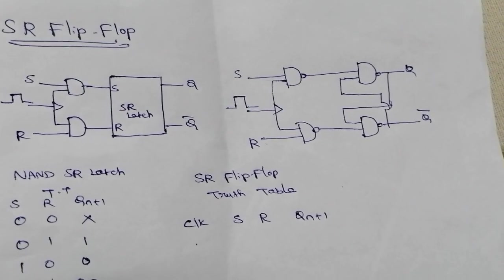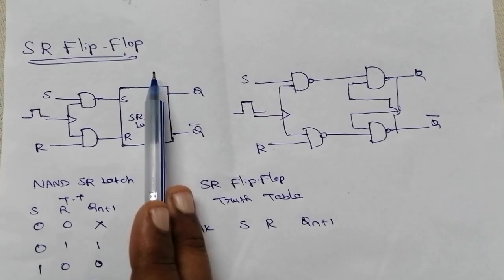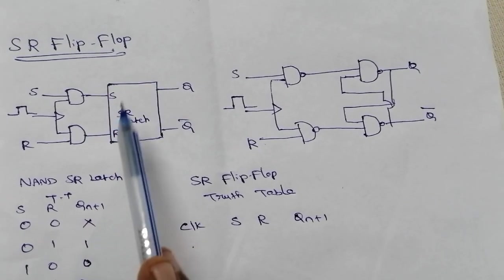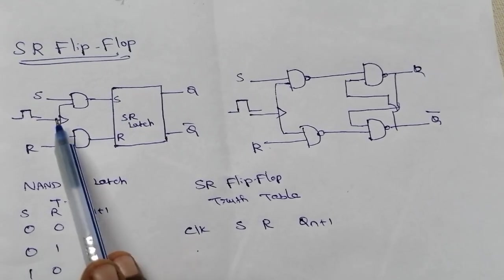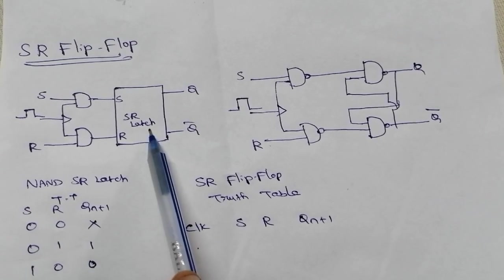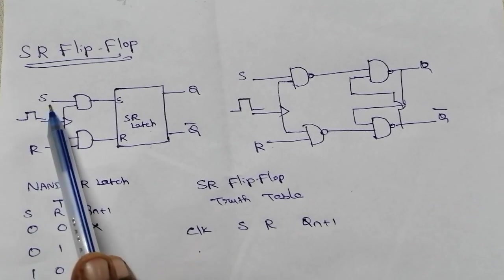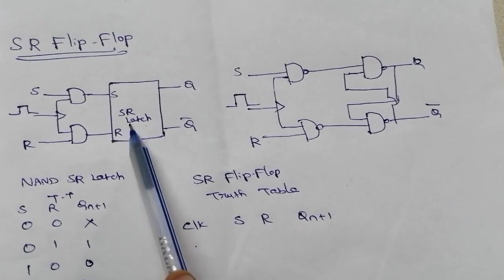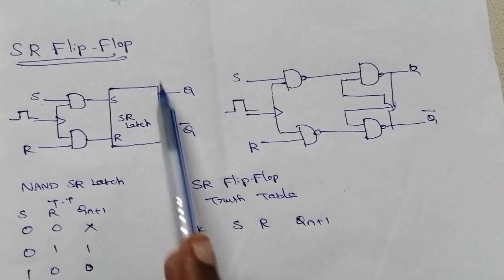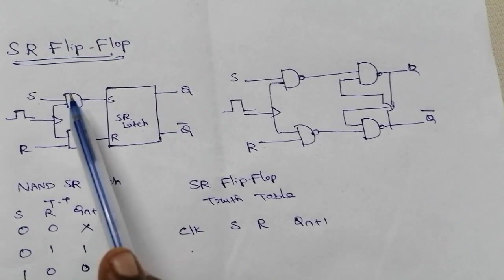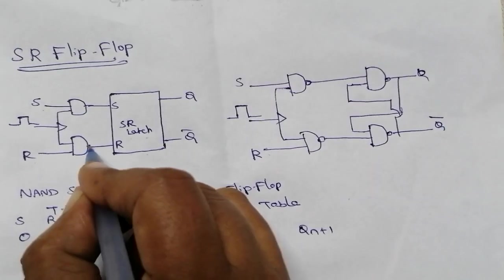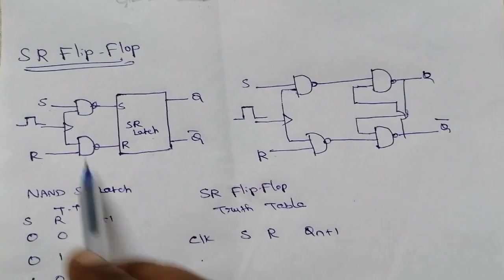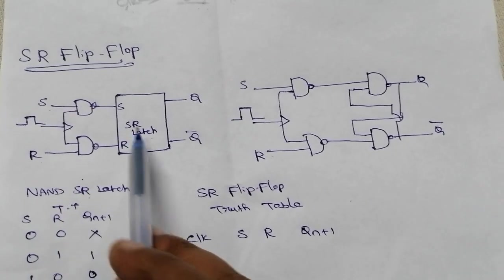Today's topic is the SR flip-flop. A flip-flop is nothing but a latch circuit with an additional control input. Here we are using Set and Reset states, which is why it's called an SR flip-flop. The SR flip-flop consists of two additional NAND gates at the S and R inputs of the SR latch.